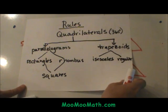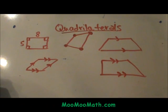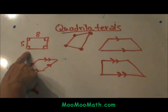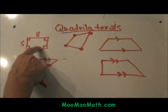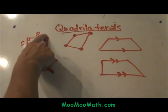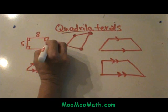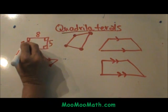So let's look at our shapes we have and see what category they would fall into. This first one we have four right angles, one side of five, one side of eight. This side has to be a five and this side has to be an eight. That is a rectangle, isn't it?